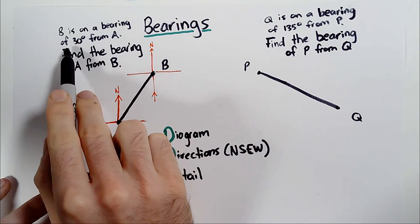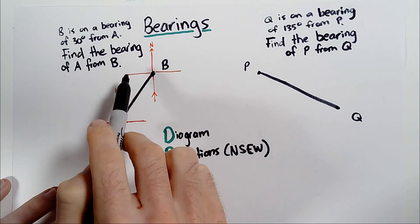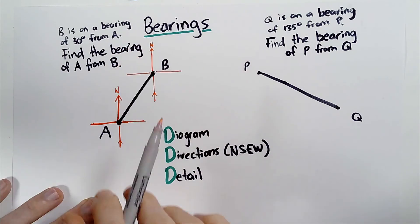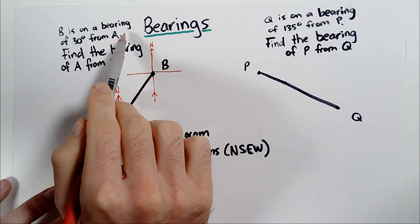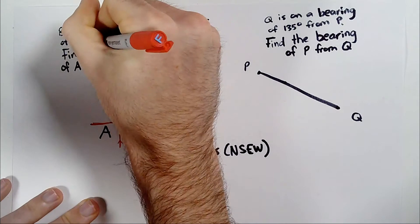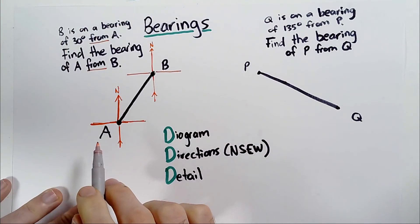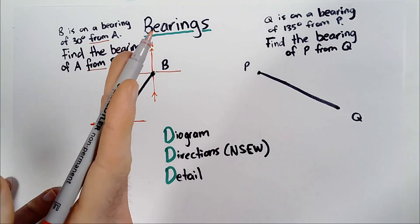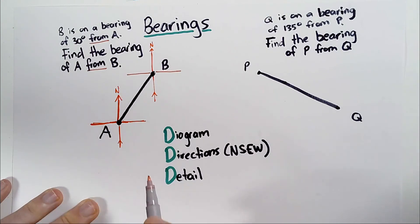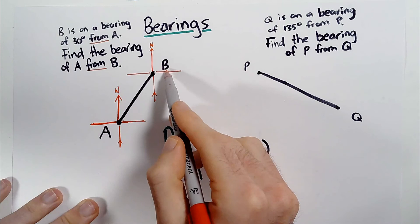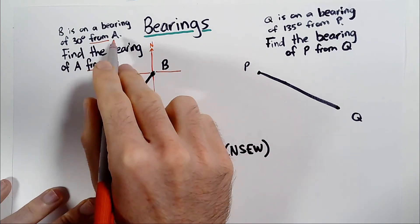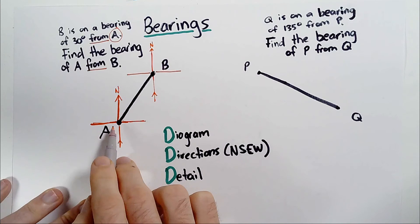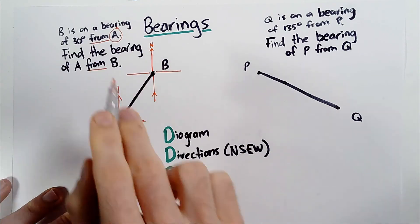Let's do these two examples and implement that. Here it says: B is on a bearing of 30 degrees from A. Find the bearing of A from B. Many people would see this and straight away think the answer is 30 degrees without drawing a diagram. But the word 'from' is the most important word in the question — it's all about where we're looking from when thinking about a bearing. Since it says B is on a bearing of 30 degrees from A, that means A is my starting point.